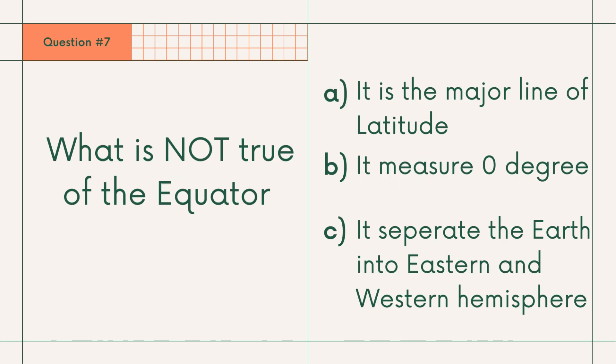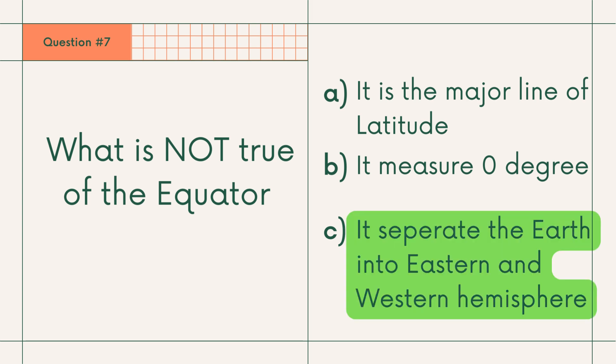Question number 7: What is not true of the equator? A. It is a major line of latitude, B. It measures 0 degrees, or C. It separates the earth into eastern and western hemisphere. Answer: C. It separates the earth into eastern and western hemisphere.